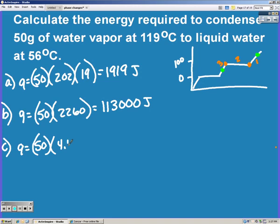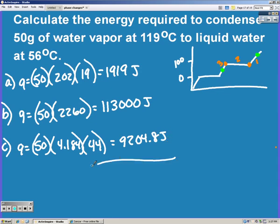We're water, so we need to use 4.184. And our change in temperature is 100 minus 56, or 44 degrees Celsius. Adding them and putting it in scientific notation, you get 1.24 times 10 to the 5th.